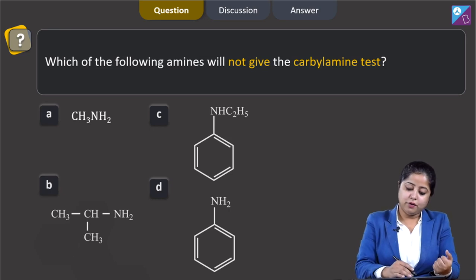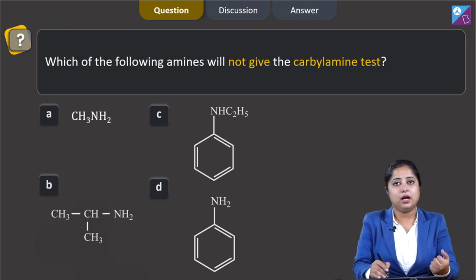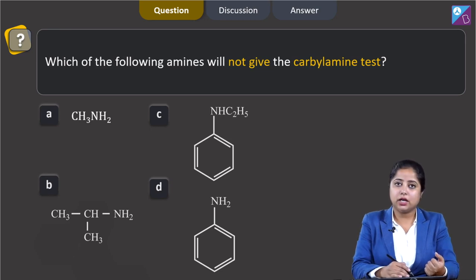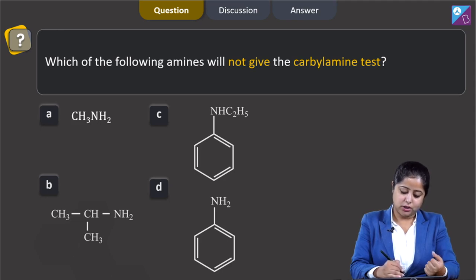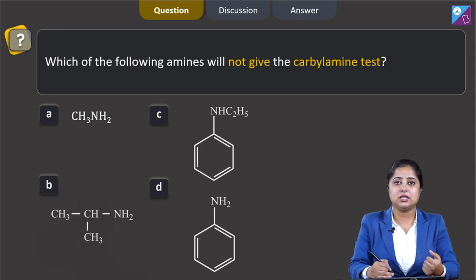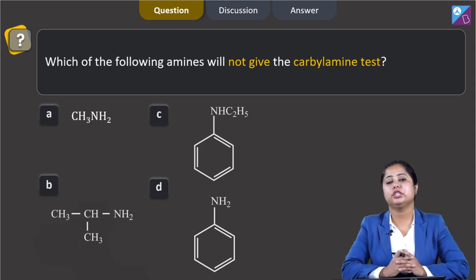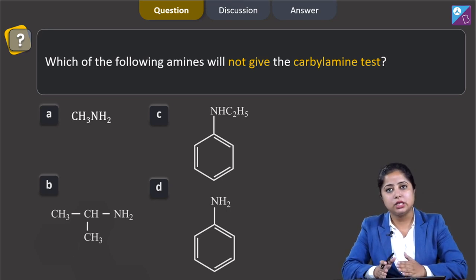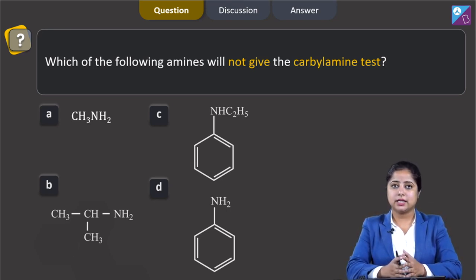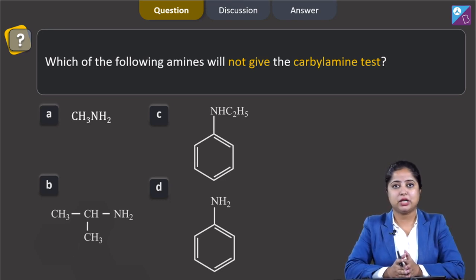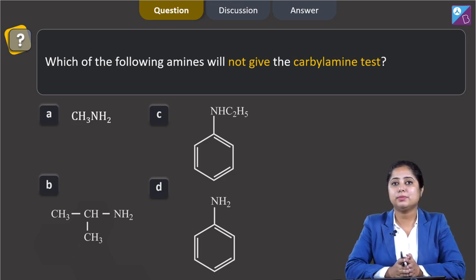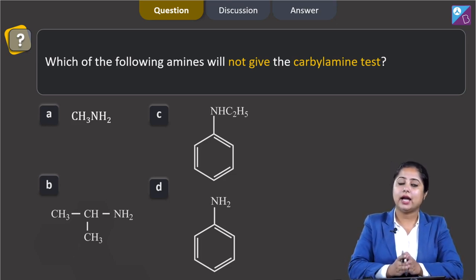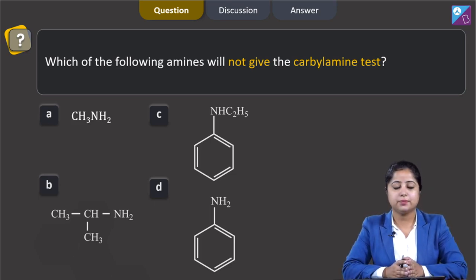Which of the following amines will not give the carbylamine test? The options are CH3NH2, benzene-NHC2H5, CH3CH(CH3)NH2, and aniline (benzene-NH2). All primary aliphatic or aromatic amines on heating with chloroform (CHCl3) and ethanolic KOH give carbylamine or isocyanides, which are foul-smelling substances. Secondary and tertiary amines do not show such reactions. This is known as the carbylamine test or isocyanide test.